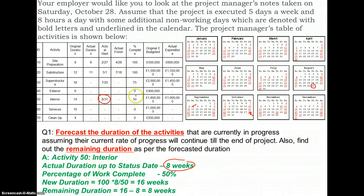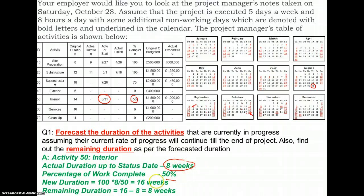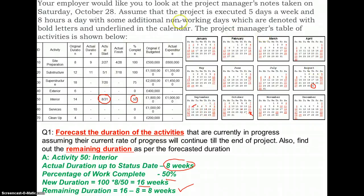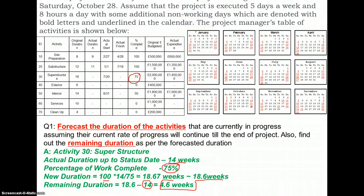From the project notes, 50% of the interior works activity has been completed. This means 50% of work was completed in eight weeks, so it would take an additional eight weeks to complete the remaining work. The remaining duration is therefore eight weeks from the reporting period, which is 28th of October.